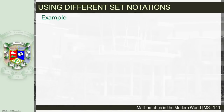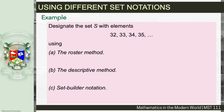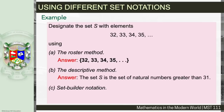Now let's designate the set S with elements {32, 33, 34, 35, …} using all three methods. In roster notation: S = {32, 33, 34, 35, …}. Using the descriptive method: S is the set of natural numbers greater than 31. Using set builder notation: S = {x | x ∈ N and x > 31}.